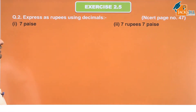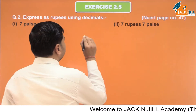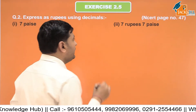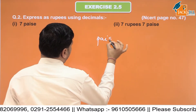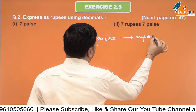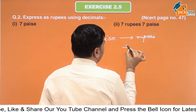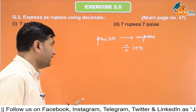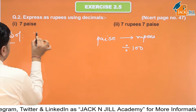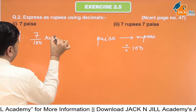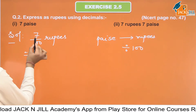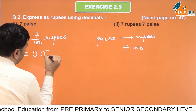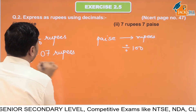Next: Express as rupees using decimal. हमें rupees में change करना है decimal का use करते हुए। पैसे को rupees में change करेंगे तो we will divide by 100. जो पैसे में है उस quantity को हम 100 से divide करेंगे। तो 7 पैसे हैं, इसको rupees में change करना है, तो 7 upon 100 करेंगे। 7 की नीचे 100 में 2 zeros आ रहे हैं, तो हम 2 digit पहले point put करेंगे। तो 0.07 rupees आ जाएगा।